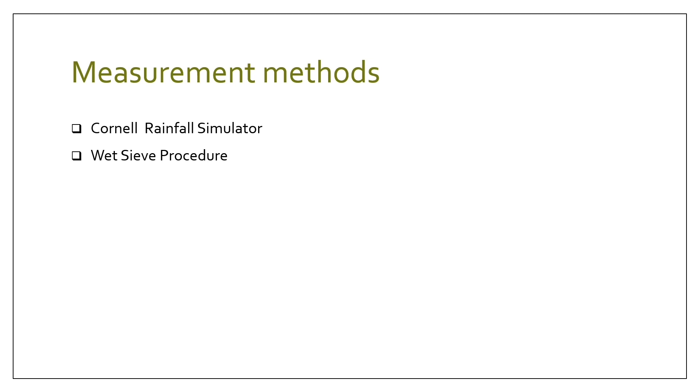One of them is Cornell Rainfall Simulator, another one is Wet Sieve Procedure, and then we have SLAKES - it is fairly a unique technique, it is a smartphone-aided procedure - and the last one is Soil Stability Index. But in this particular video I am going to briefly show you the wet sieve procedure method for calculating the aggregate stability of our soil in the laboratory.